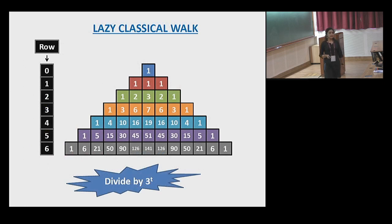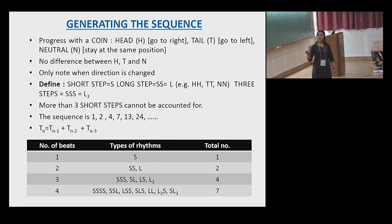Now I'm showing a lazy classical walk, which I defined in this way, that the classical walker can go to the right or left, but it can also stay in the middle. The probability for the first step will be obtained by dividing by 3 to the power t. In each step, I divide by 3 to the power t to have the actual probability. From here also, I can have the same kind of patterns. As I defined that two short steps, there may be a long step of two short step duration, and there may be a very long step of three short steps duration. These are the patterns observed here: S, L, and L3.